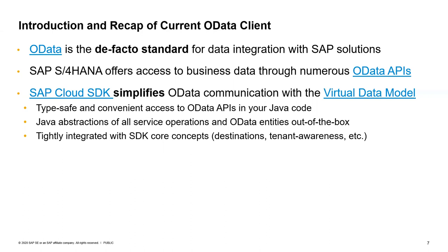Along with that, you receive Java abstractions for all the service operations that the API provides, and also Java abstractions for the OData entities. This all comes out of the box by using the virtual data model of the Cloud SDK, tightly integrated with core concepts like destinations and tenant awareness.